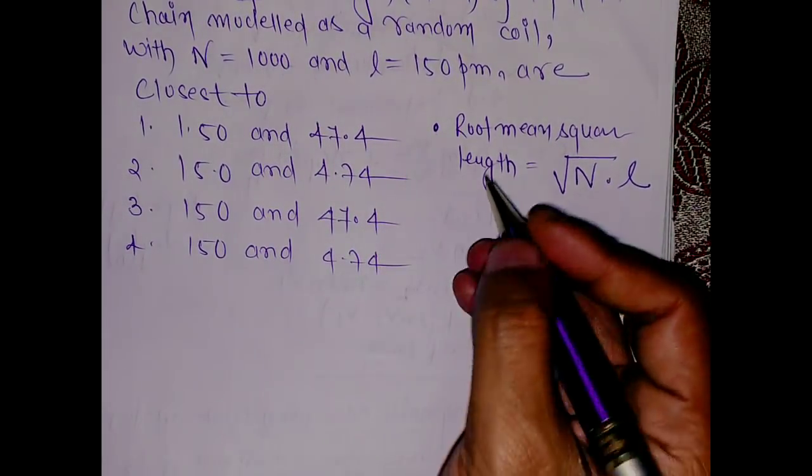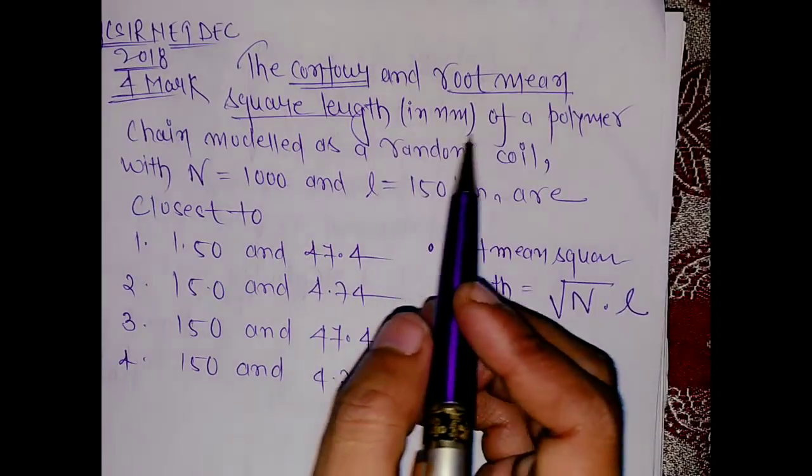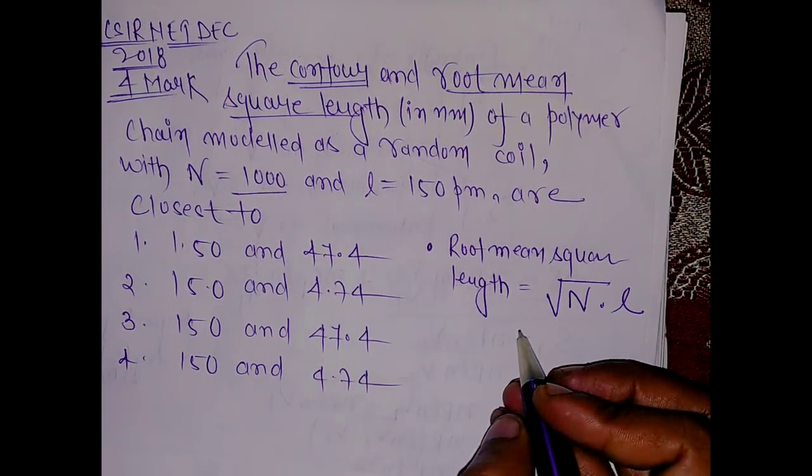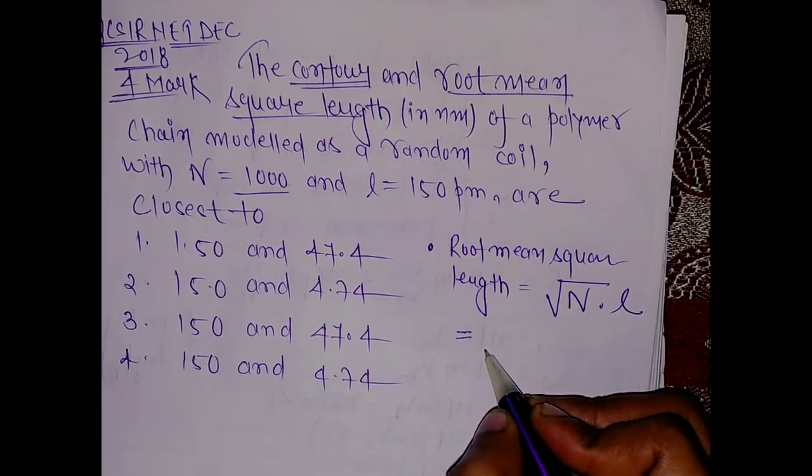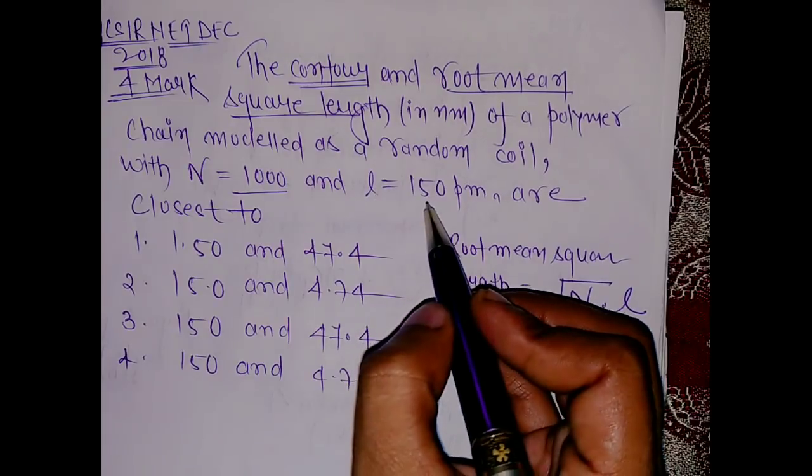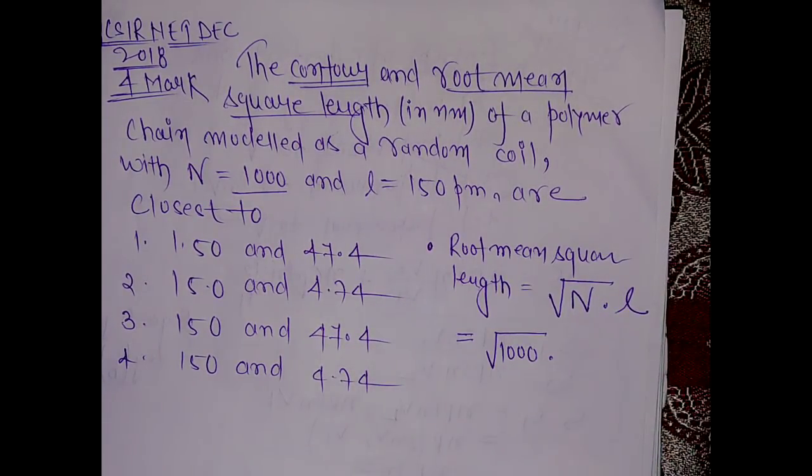If you apply this formula to the given question, we have N equals to 1000. So just put root of 1000 into the length which has been given as 150 picometer.